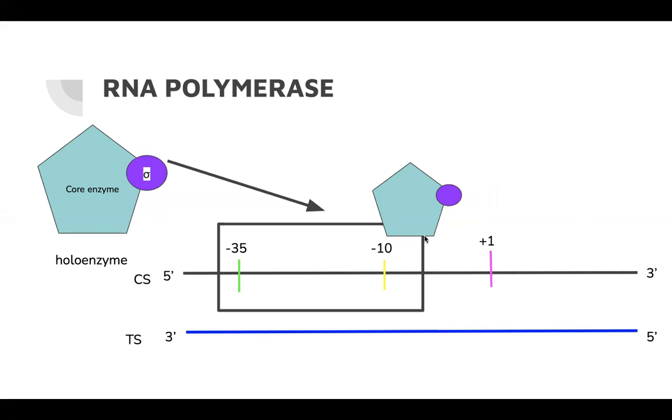RNA polymerase core enzyme comes in and binds with a sigma factor to form RNA polymerase holoenzyme. This enzyme knows to bind to a certain consensus sequence on the promoter region.